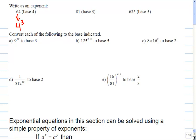What about 81? Can somebody write that in base 3? 3 to the 4th. And finally, how about 625 in base 5? That'll be to the 4th as well. So 5 to the 4th.